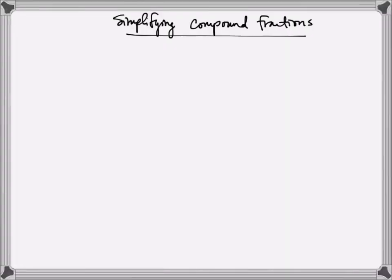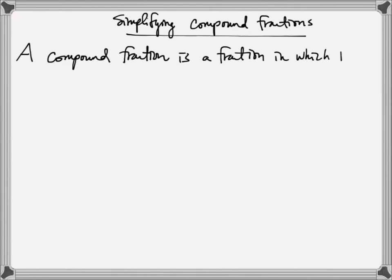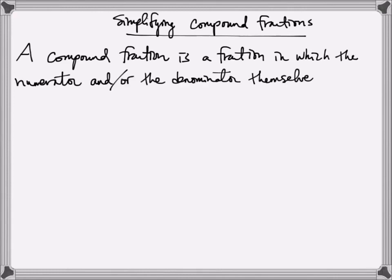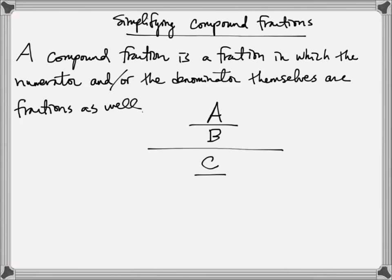Let's look at how to simplify compound fractions that involve polynomial functions. A compound fraction is a fraction in which the numerator and/or the denominator are themselves fractions as well. For example, the expression a over b divided by another fraction c over d would be considered a compound fraction. There are multiple approaches to do this — I'll present two ways via the following example.